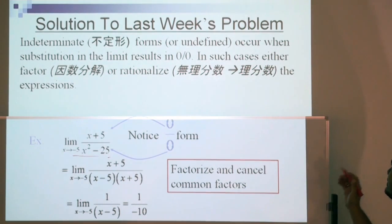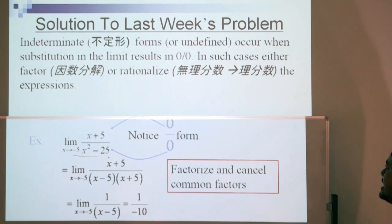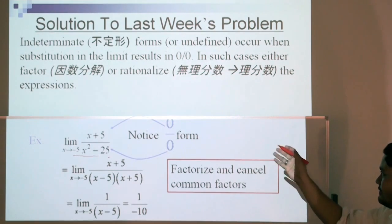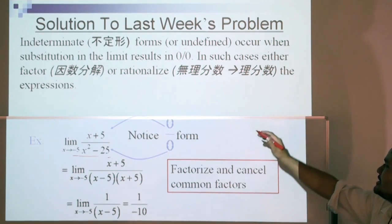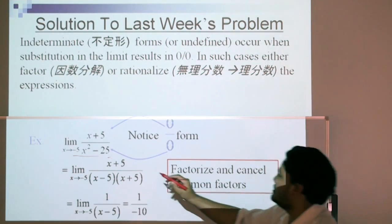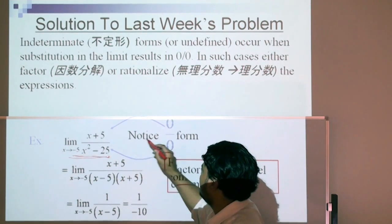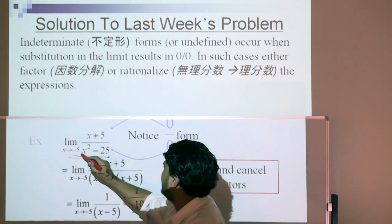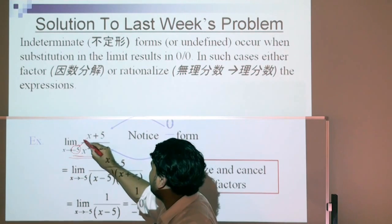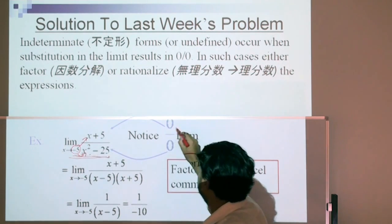Indeterminate forms or undefined occur when substitution in the limit results in 0 over 0. In such cases, either factorize or rationalize the expressions. If you insert negative 5 directly here and here, you'll get 0 over 0. If you put that in your calculator, you'll get undefined.